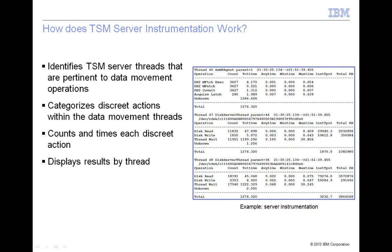It will categorize each discrete function within these data movement threads. Then it will count the number of times each function is invoked and calculate the total time spent on each function within the thread. The resulting statistics are displayed in a tabular format for each data movement thread that has been identified. This is an example of a portion of a server instrumentation output.